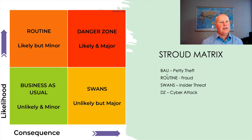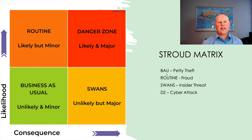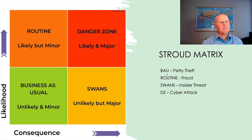Let's talk about risk analysis. We work with risk matrices, and here's a model I use regularly as a strategic analysis tool — a conversational tool, a discussion tool. It helps with prioritising risks, thinking about budgets and identifying risks. The y-axis is likelihood, the x-axis is consequence, and there are really four categories of risk: business as usual (like petty theft for a chain of department stores), routine (like minor fraud), swans on the bottom right, and a danger zone of high likelihood, high consequence. I'm familiar with the black swan model and I think Taleb's done some great work there.